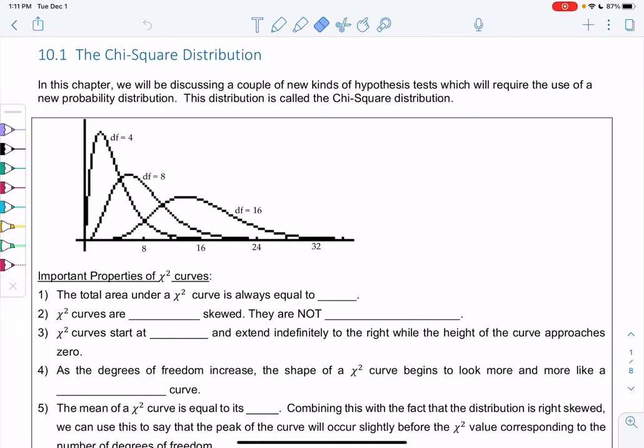Section 10-1, the chi-square distribution. In this chapter, we'll be discussing a couple new kinds of hypothesis tests which will require the use of a new probability distribution. So instead of the normal curve or the t-curve, we're going to use this new one called chi-square.